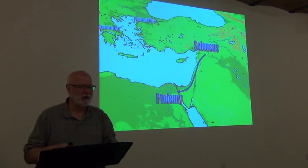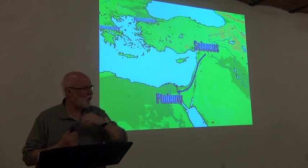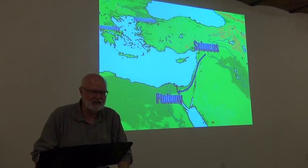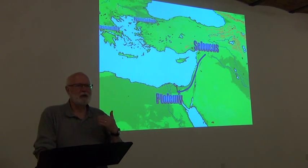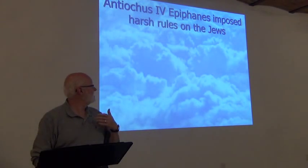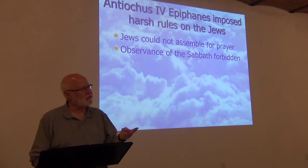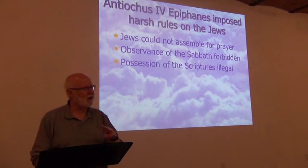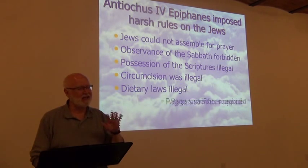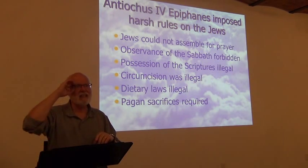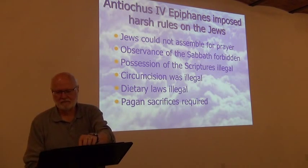After getting chased out of Egypt, knowing he couldn't attack because that meant fighting the Romans, Antiochus went back up to Syria and Israel. As they say, somebody gets beat up in the schoolyard, they go home and kick the cat — the cat being the Jewish people. He set up horrendous new rules against the Jews: they could not assemble for prayer, observance of the Sabbath was forbidden, possession of the Hebrew scriptures was illegal, circumcision was illegal and women were being executed for having their children circumcised, dietary laws were forbidden, and they set up pagan idols — especially an idol to Zeus in the temple — and were sacrificing pigs on the altar.